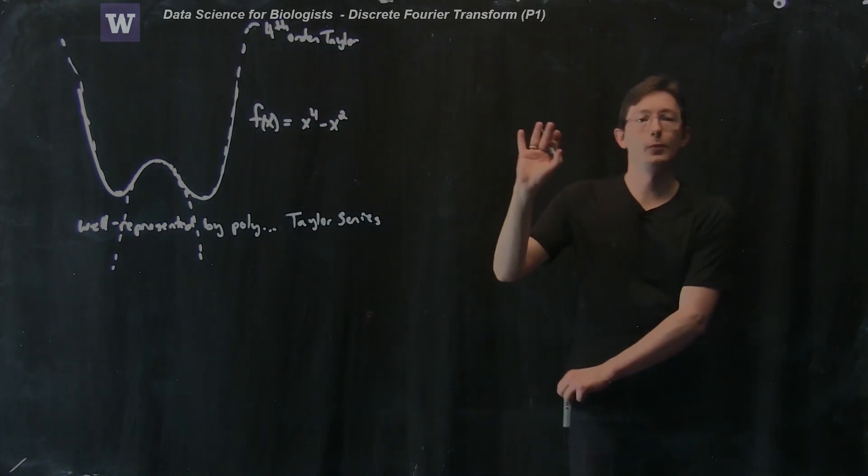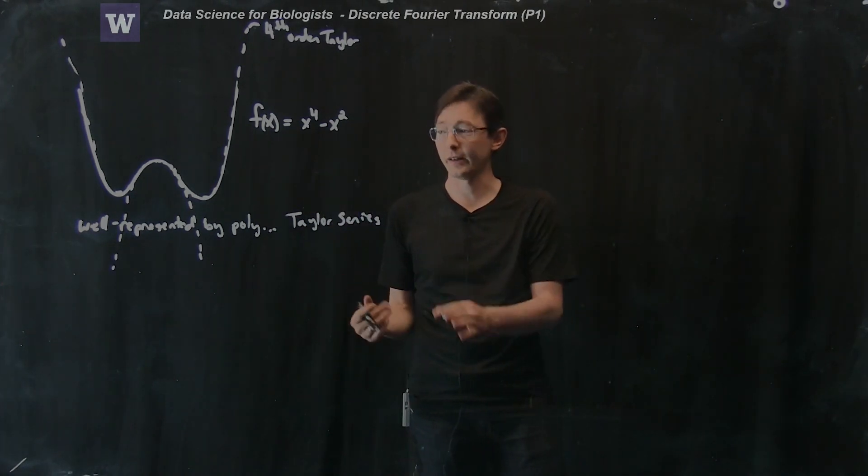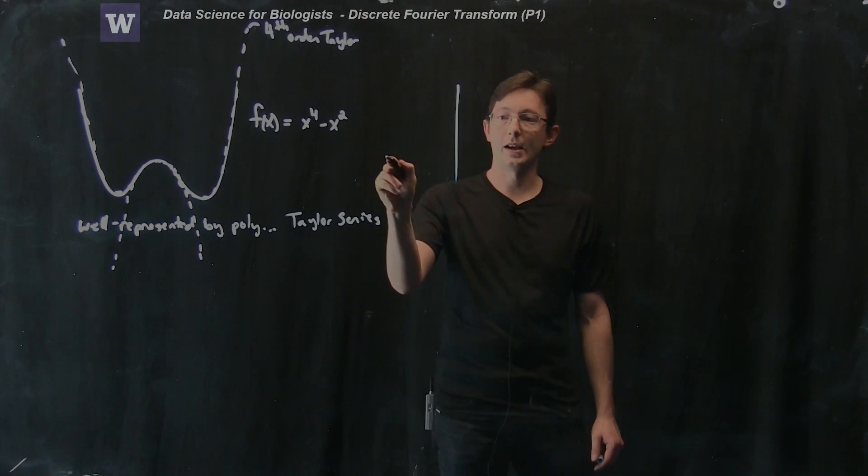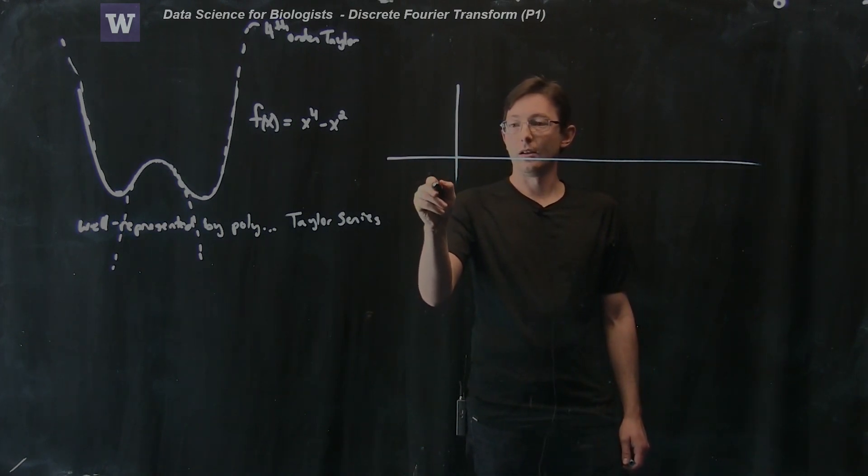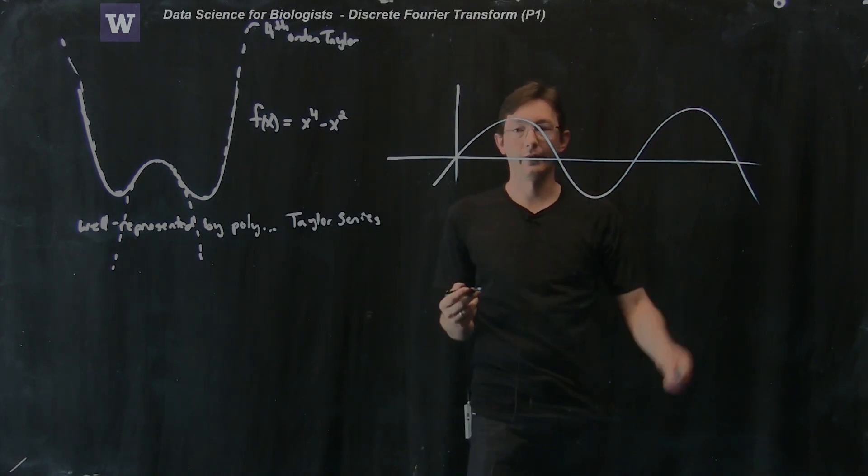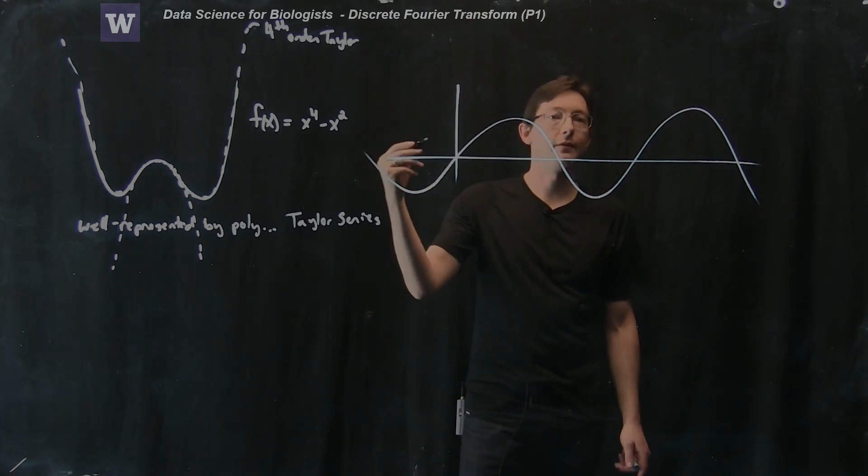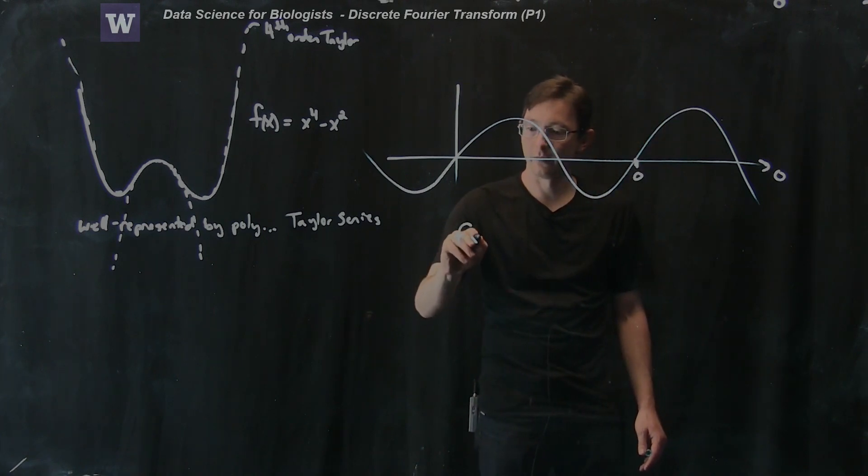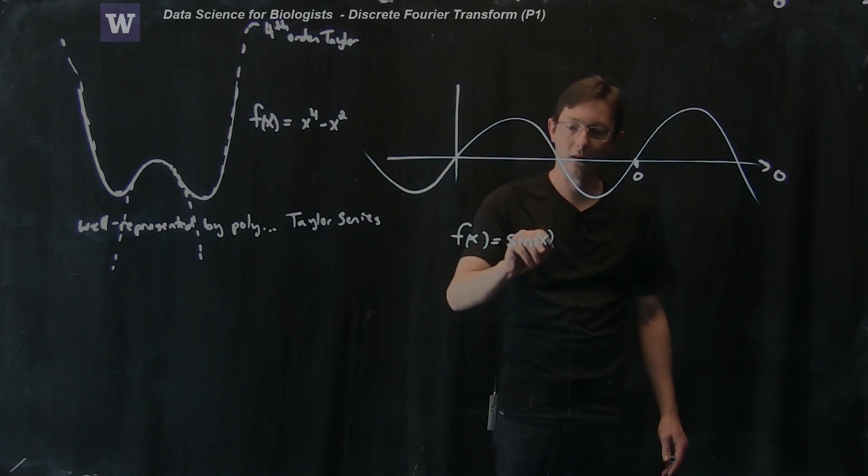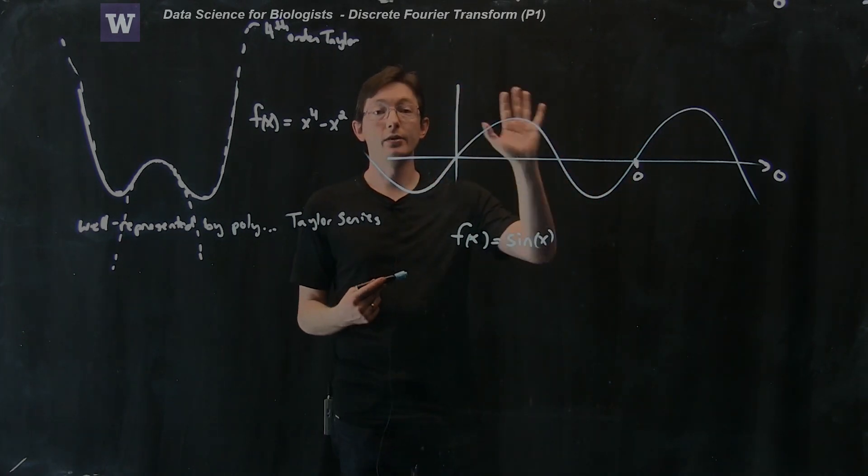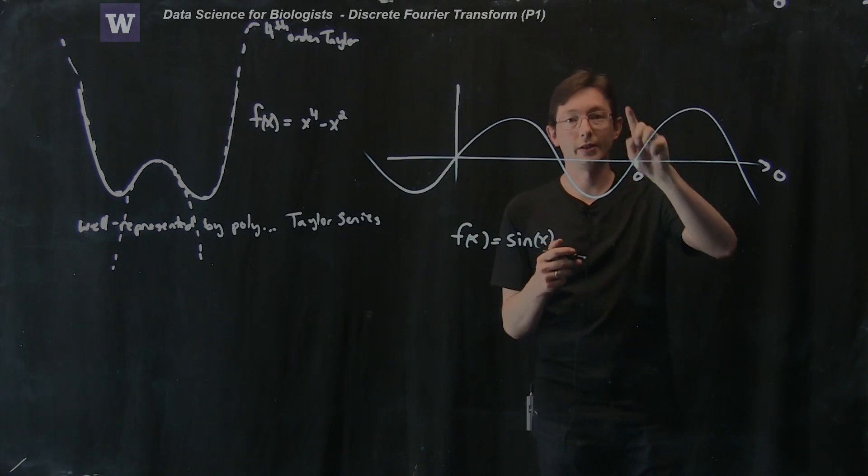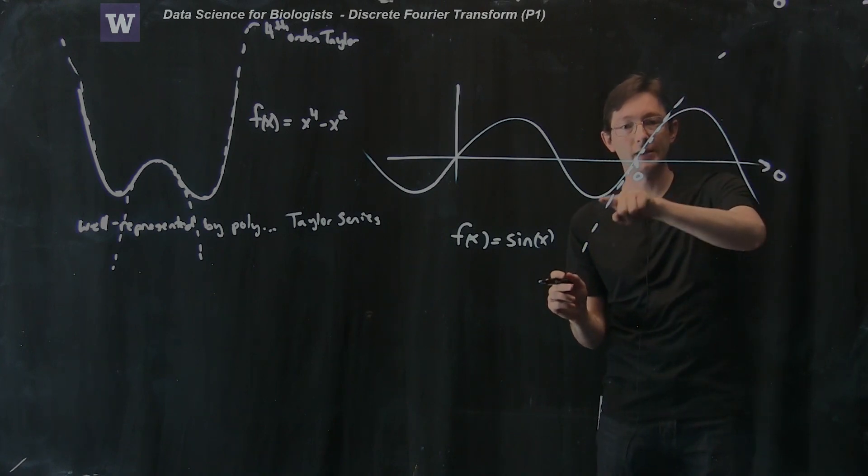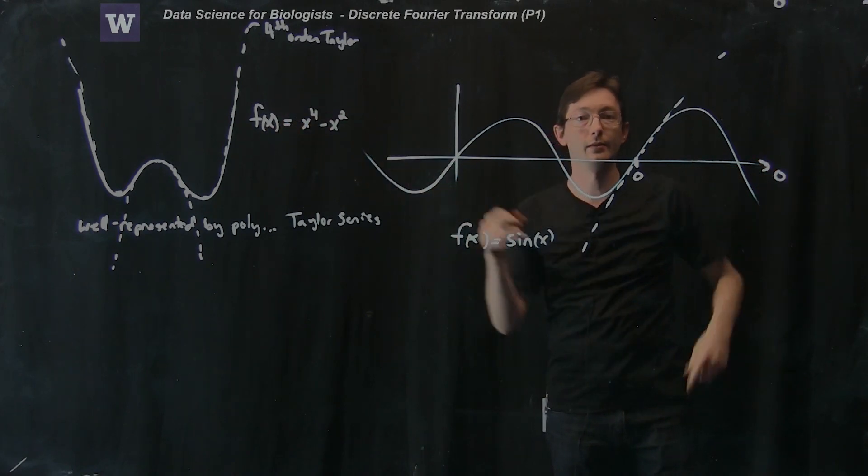So lots of functions are actually well approximated by Taylor series. We use Taylor series a lot. But some functions are really poorly approximated with Taylor series. So let's take, for example, a sine wave. If I just have sine of t or sine of x, this function is not very well approximated by a Taylor series. To approximate this function using a Taylor series approximation about zero, if I do a first order expansion, I just get a line. And that line agrees pretty well in a vicinity of zero, but it doesn't agree for all of the other points in space.